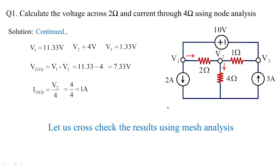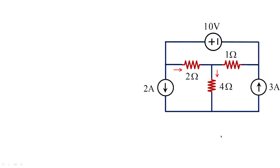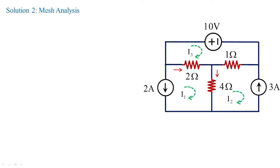Whatever we have done, whether right or wrong, we can check with mesh analysis also. I am solving the same circuit using mesh analysis. We need to know the voltage across 2 ohms and the current in 4 ohms. I will be taking the loop current directions i1, i2, i3 as clockwise. You can have your own directions of loop currents. Here i1 equals minus 2 amperes — you can see the direction of loop current i1 and the source current 2 amperes are acting opposite. Similarly, i2 equals minus 3 amperes.